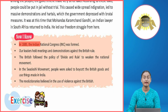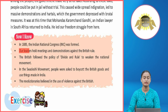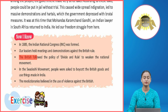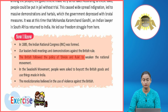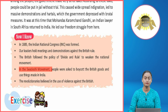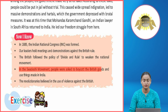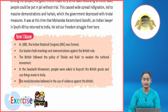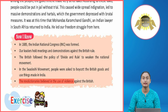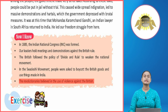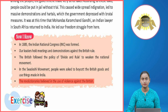Now, to summarize: In 1885, the Indian National Congress (INC) was formed. Our leaders held meetings and demonstrations against British rule. The British followed the policy of Divide and Rule to weaken the national movement. In the Swadeshi Movement, people were asked to boycott British goods and use things made in India. The revolutionaries believed in the use of violence against the British.